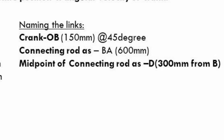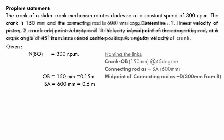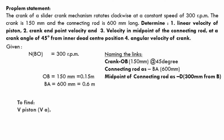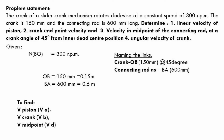Let us write the given data. Crank speed: RPM of BO = 300. OB = 150 mm, that is 0.15 m. Connecting rod length BA = 600 mm, that is 0.6 m. We need to find: velocity of piston VA, velocity of the crank VB, velocity of the midpoint VD, and angular velocity of the crank.